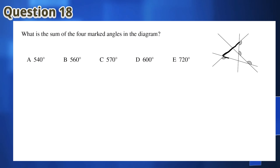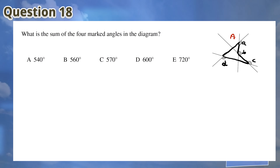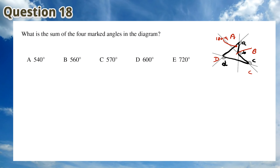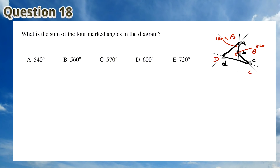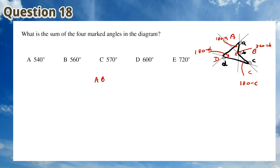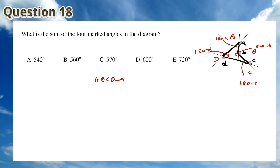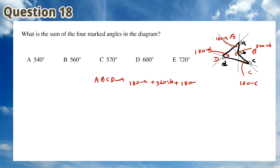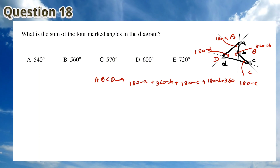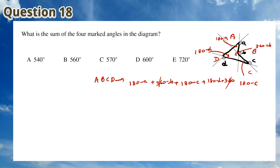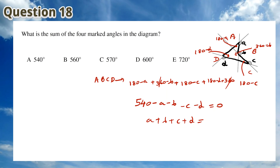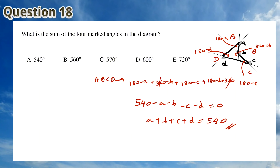For Question 18, we can mark the 4 shaded angles as A, B, C and D. We can then mark the interior angles of the quadrilateral as 180 minus A, 360 minus B, 180 minus C and 180 minus D. The sum of the interior angles of this quadrilateral gives us 540 minus A minus B minus C minus D equals 360, which simplifies to A plus B plus C plus D equals 540. This means that the answer is A.